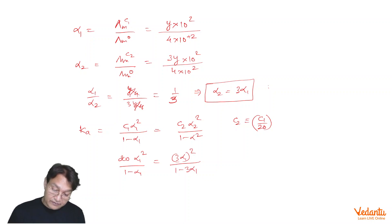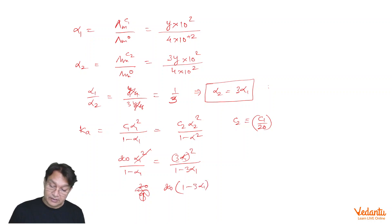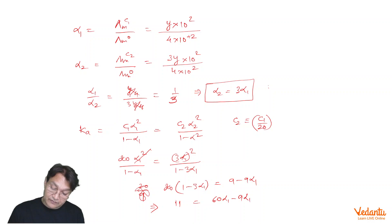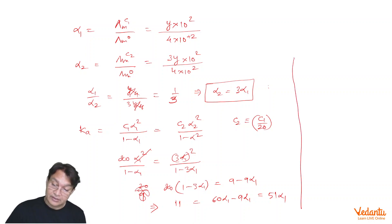The alpha1² terms cancel, giving 20/9. Expanding: 20·(1 − 3·alpha1) = 9·(1 − alpha1), which becomes 20 − 60·alpha1 = 9 − 9·alpha1. Rearranging: 20 − 9 = 60·alpha1 − 9·alpha1, so 11 = 51·alpha1. Therefore alpha1 = 11/51.